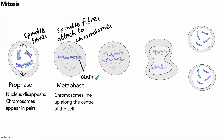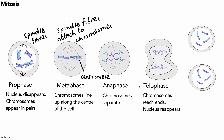In the next phase, called the anaphase, the chromosomes separate — they are pulled apart by the spindle fibers to opposite ends of the cell. Then we have the telophase, where the chromosomes reach the ends of the cell, the nuclear membrane begins to reappear, and the cell begins to pinch off into two separate cells.